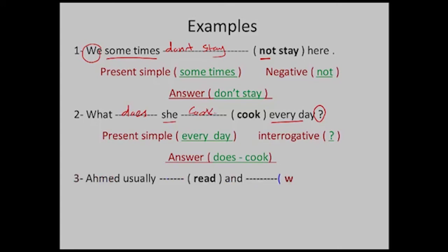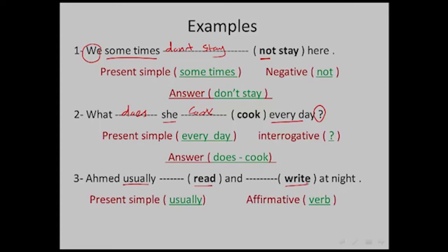Example three: 'Ahmad usually read and write at night.' It is Present Simple because of 'usually', and affirmative because the verbs are ordinary verbs without 'not' and without a question mark. Ahmad refers to 'he', so in the affirmative we add S to the verbs. The answer is: 'Ahmad usually reads and writes at night.'